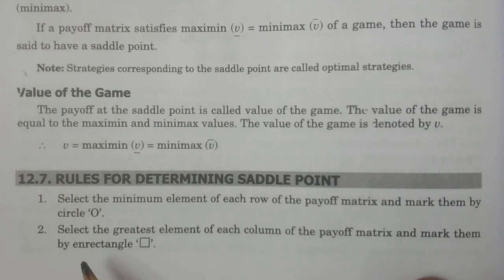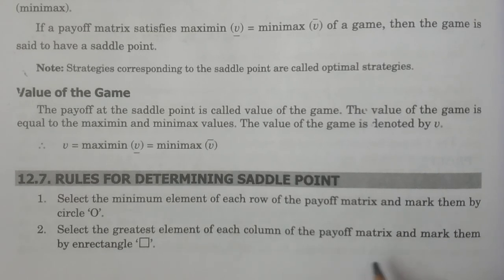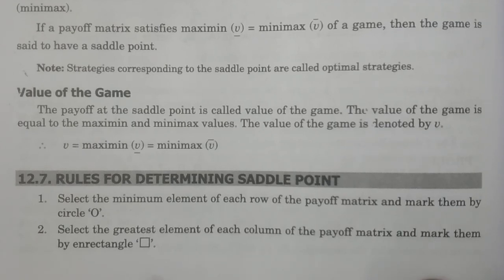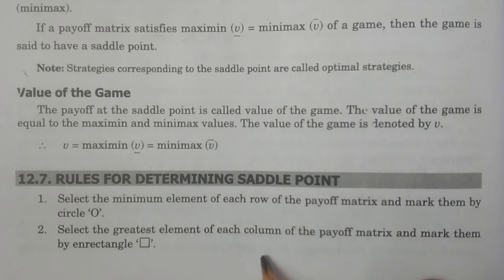The second step: select the greatest element of each column of the payoff matrix — that is, the maximum element for each column — and mark them by rectangle, that is by drawing a square box around them. You have to identify the maximum element of each column in the payoff matrix and then rectangle the respective element.